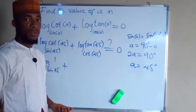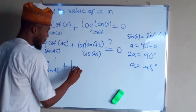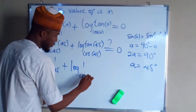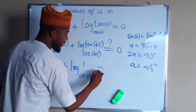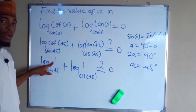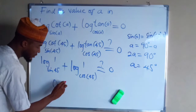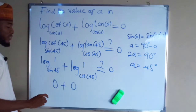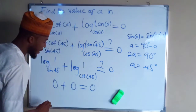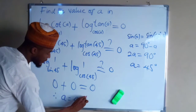Both sine 45 and cos 45 are the same, so tan 45 equals 1. We have log 1 base sine 45 plus log 1 base cos 45. Log 1 of any base is equal to 0, so this is 0 and this is also 0. And 0 plus 0 equals 0. Therefore, A equals 45 degrees is confirmed.